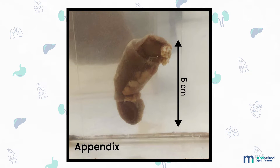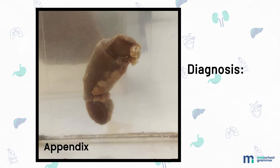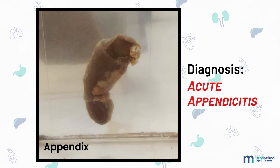Next you have a specimen of the appendix measuring 5 centimeters in length and dilated at the tip. The external surface shows an edematous serosa, while the cut surface shows a lumen which appears obliterated. Diagnosis: this is a specimen of acute appendicitis.